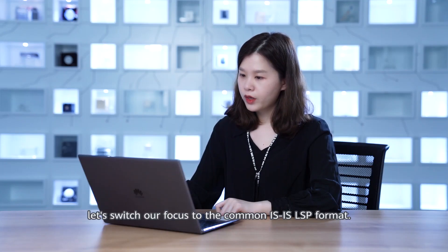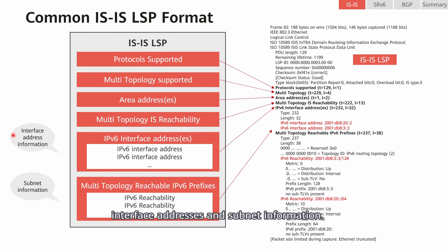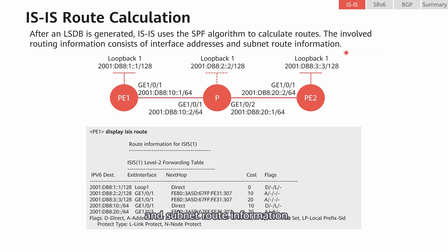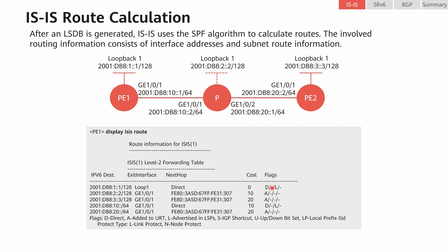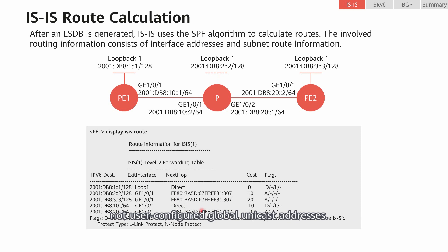Let's switch our focus to the common IS-IS LSP format. IS-IS LSPs contain two types of key information: interface addresses and subnet information. After an LSDB is generated, IS-IS uses the SPF algorithm to calculate routes. The involved routing information consists of interface addresses and subnet route information. We can see that the IS-IS routing information displayed in the command output of P1 is consistent with that carried in the corresponding IS-IS LSPs. In addition, the next-hop addresses are link-local addresses, not user-configured global unicast addresses.